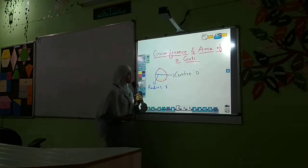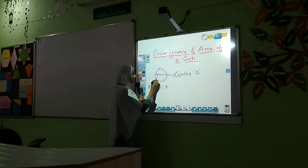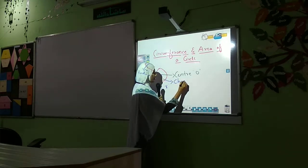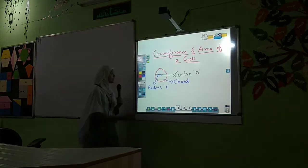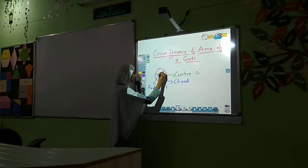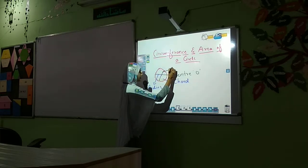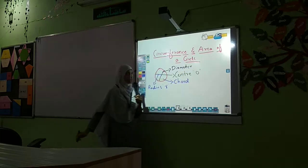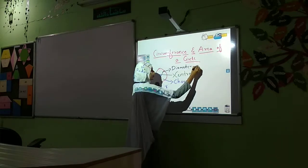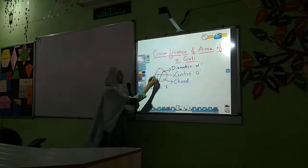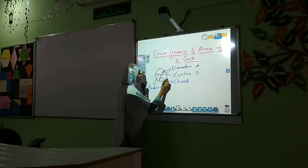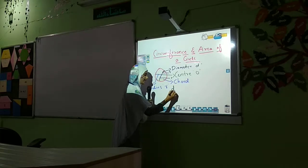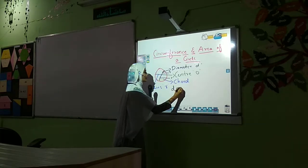A line passing through two distinct points on the circle is known as a chord of the circle. When that line passes through the center, it is nothing but the diameter of the circle. The diameter is denoted as small d. The important point here is that diameter is equal to twice the radius.